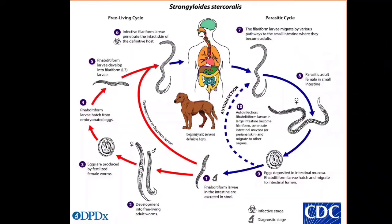For the life cycle, the Strongyloides stercoralis life cycle is complex, alternating between free-living and parasitic cycles and involving auto-infection. In the free-living cycle, rhabditiform larvae are passed in the stool of an infected definitive host and develop into either infective filariform larvae or free-living adult males and females who mate and produce eggs, from which rhabditiform larvae hatch and eventually become infective filariform larvae.